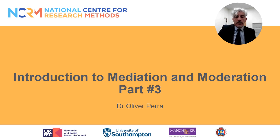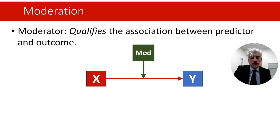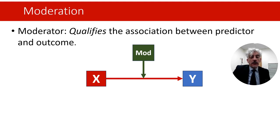Hello, I'm Oliver Perra and this is the third part of my introduction to mediation and moderation. In presentations one and two I talked about mediation, but I also introduced moderation, saying that a moderator is a variable that qualifies the association between a predictor and an outcome. The strength or even the sign of the association between the predictor and outcome changes depending on the values of the moderator.